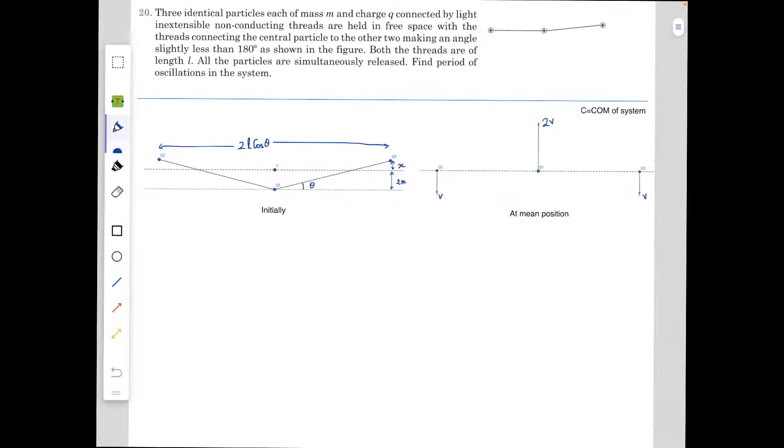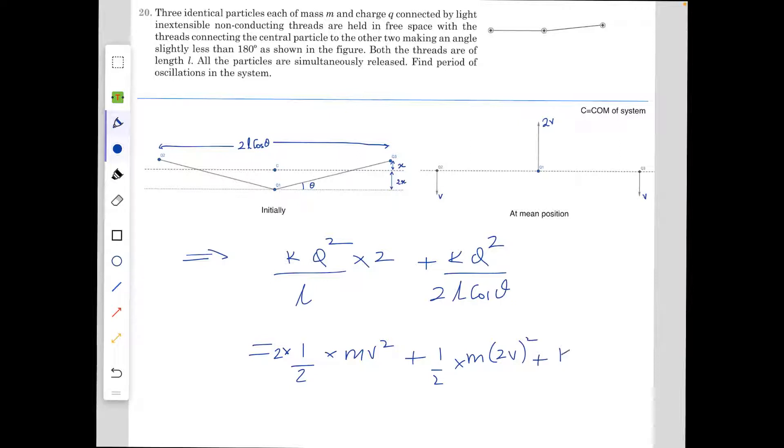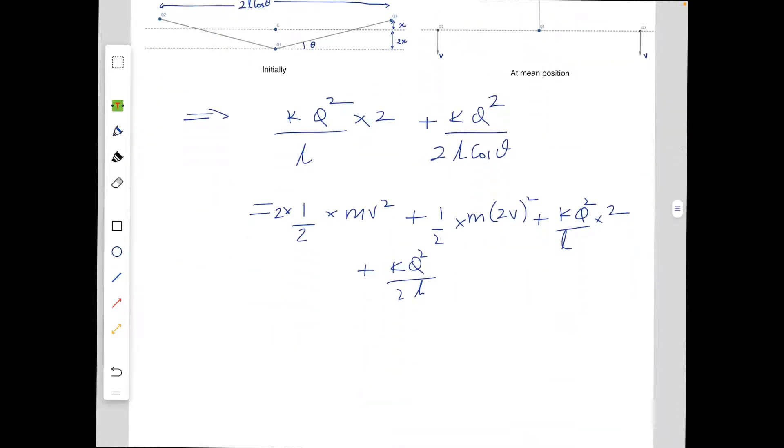From here, by energy conservation, kQ²/(2R)·2 + kQ²/(2L)cosθ, and initial kinetic energy was zero, equals the final kinetic energy. It will be 2 times ½mV² plus ½m(2V)² plus kQ²/(L·2) plus kQ²/L. From here we can see that the kQ²/(L·2) term gets cancelled.